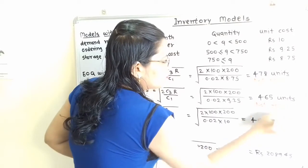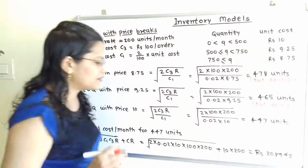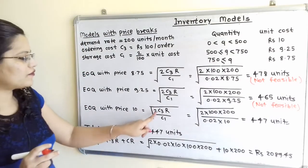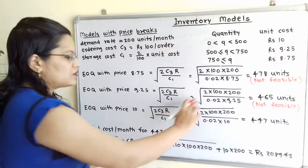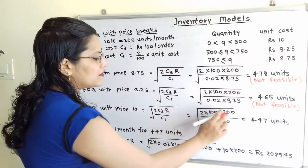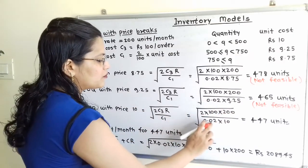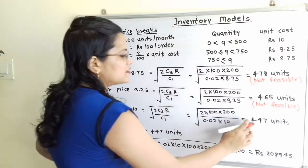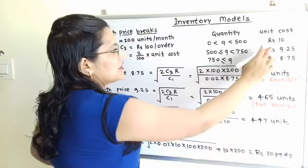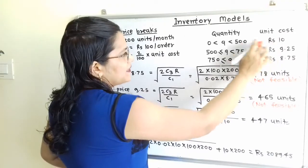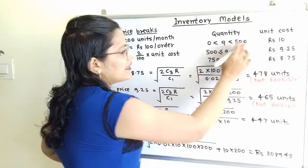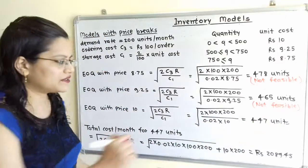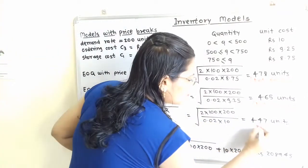We move to the next price, Rs.10. EOQ at Rs.10: using √(2C3R / C1), with C3 = 100, R = 200, and C1 = 0.02 × 10, gives 447 units. This price is applicable for quantity less than 500, and 447 < 500, so this is a feasible solution.